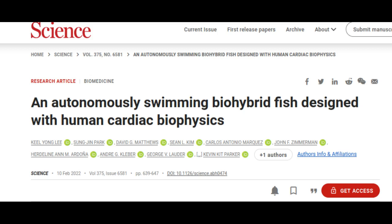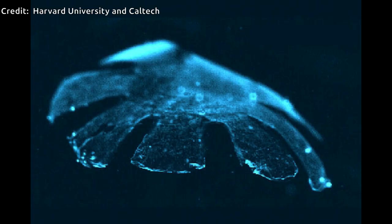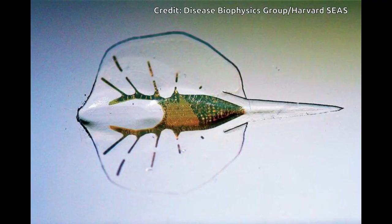The bio-hybrid fish developed by the team builds off previous research. In 2012, the research lab used cardiac muscle cells from rats to build a jellyfish-like bio-hybrid pump, and in 2016, the researchers developed a swimming artificial stingray also from rat heart muscle cells.